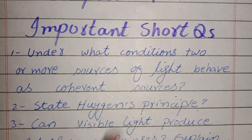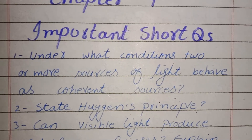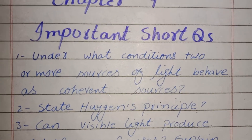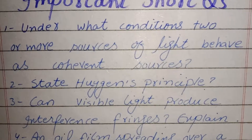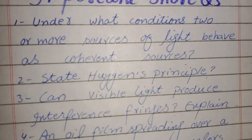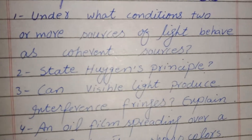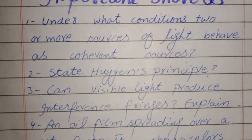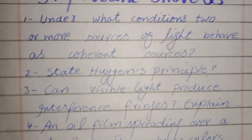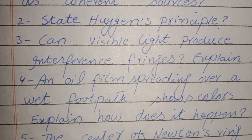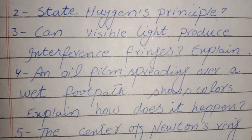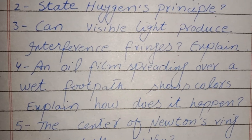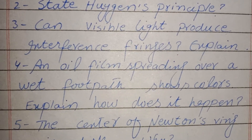Under what condition do two or more sources of light behave as coherent sources? State which principle can visible light produce interference.